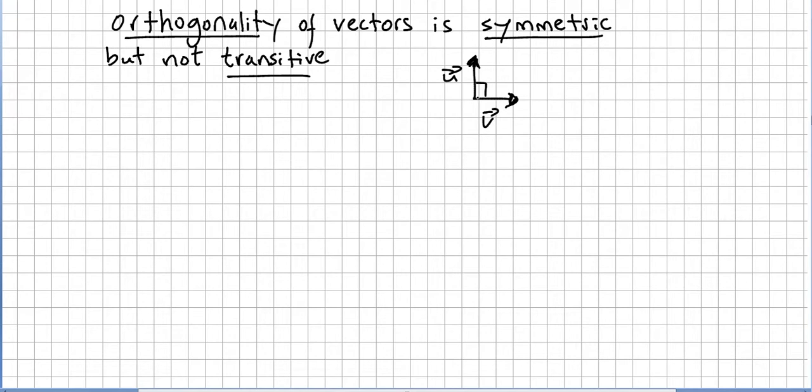But the fact that u is perpendicular to v, if there is another vector that is perpendicular to v, doesn't mean that u is perpendicular to that other vector.